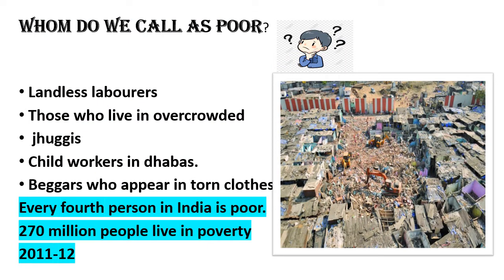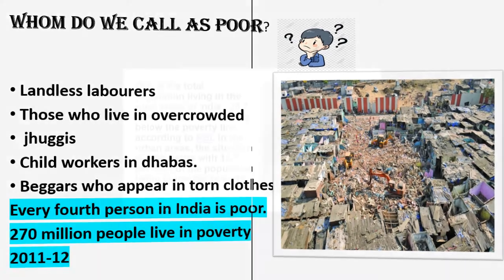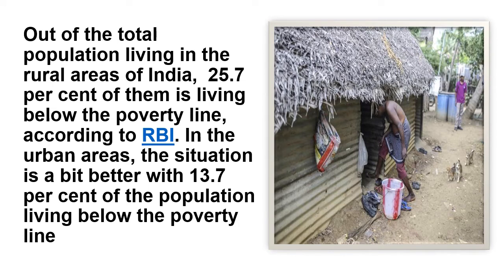Whom do we call as poor? Among those whom we call as poor, there are definitely landless laborers, those who live in overcrowded slums — as you see in the picture — child workers working in roadside restaurants, and beggars. It is said that every fourth person in India is poor. According to an estimate from a survey conducted in 2011-12, 270 million people of India were found to be living in poverty.